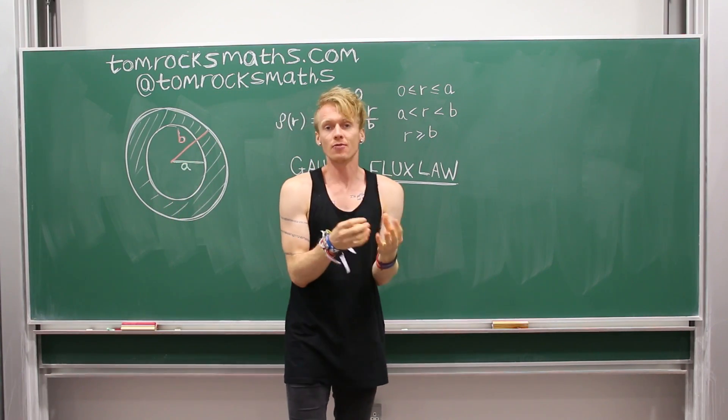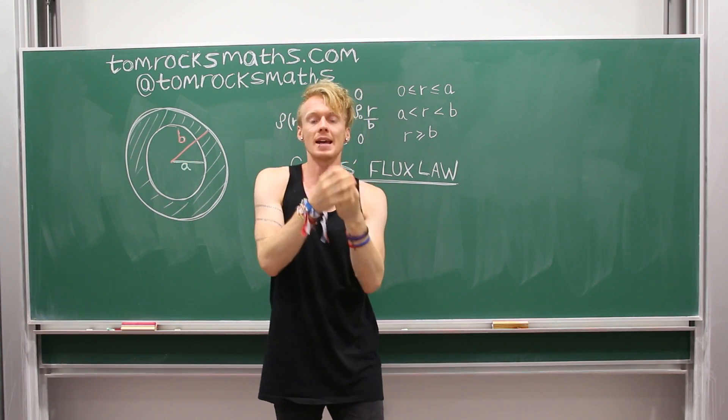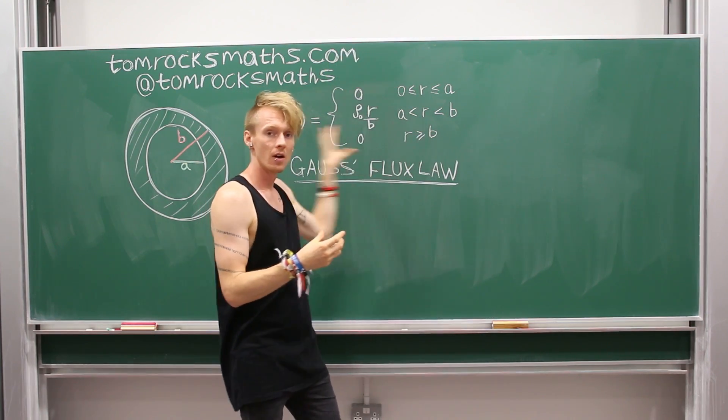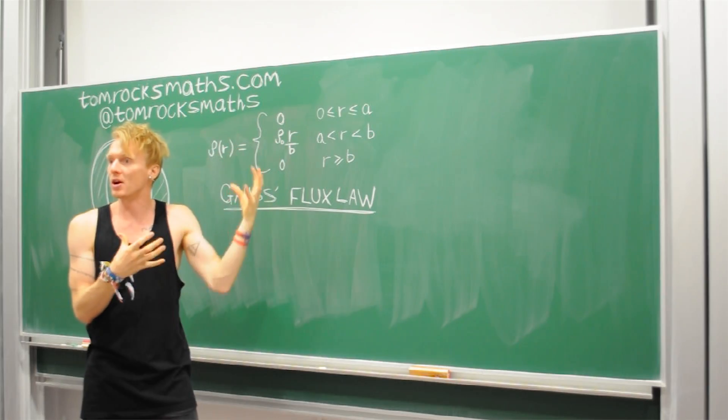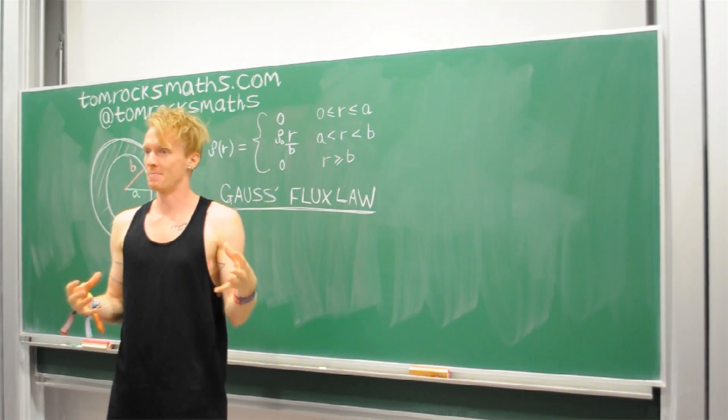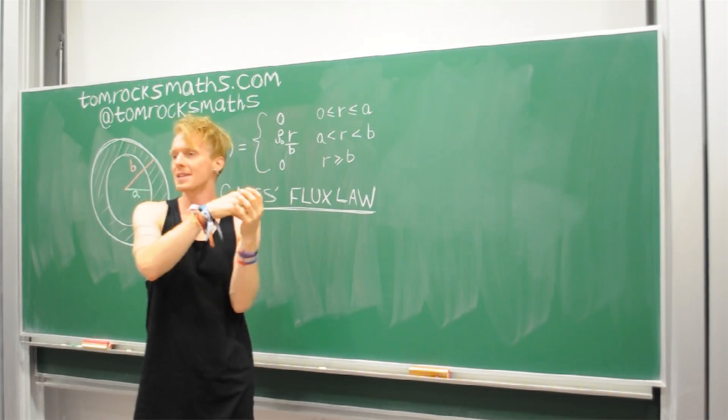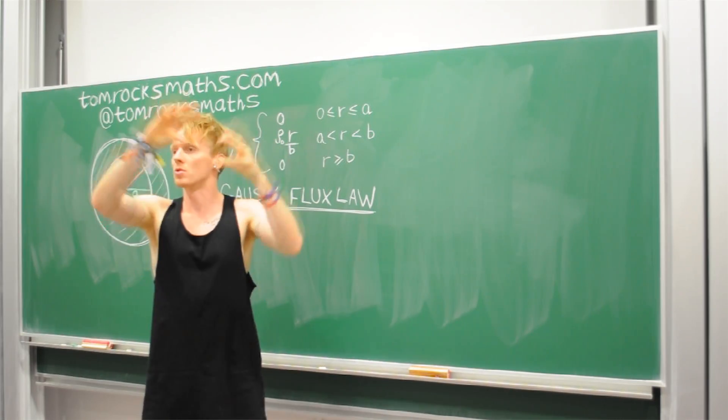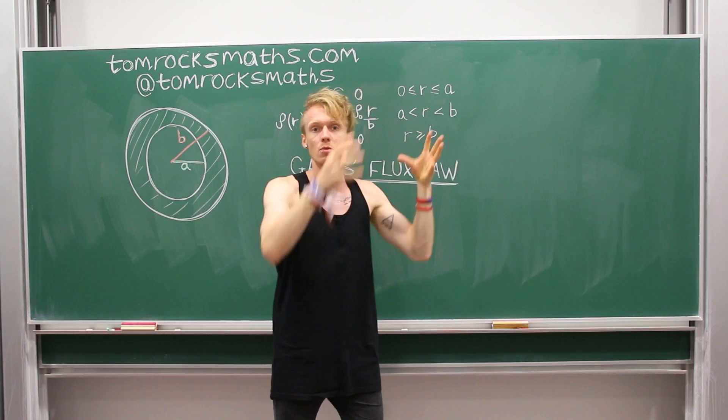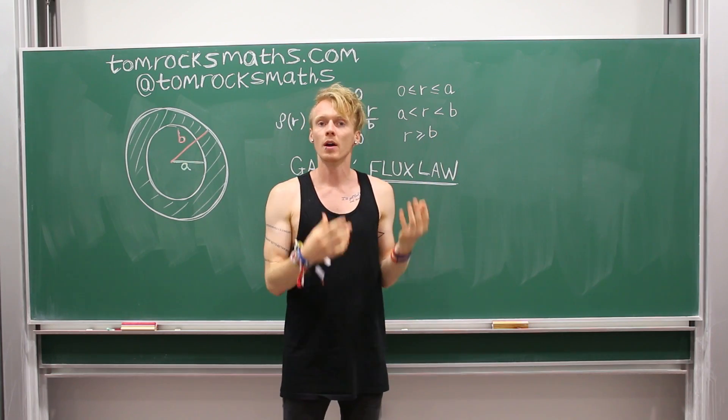So this is a general physical law, and it relates the density distribution of a planet, or of an object, or a body, to the gravitational field of that body. So how the mass of the object relates to its gravitational force, depending on how far and around and where you are in relation to the object.